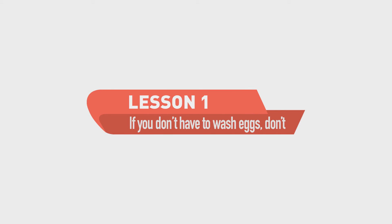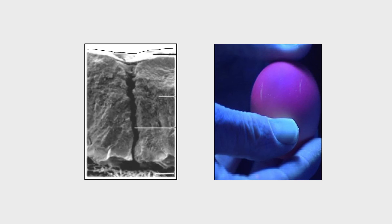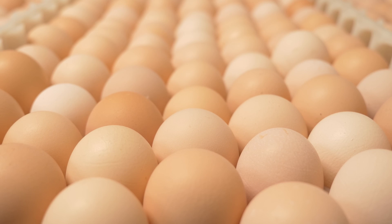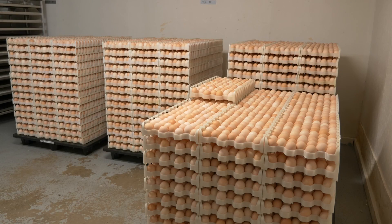This leads us to our first lesson: if you don't have to wash eggs, don't. Since there's no difference between these two categories, they should be shipped as is. Washing eggs can remove the cuticle, a protective layer on the outer part of the shell. We'll learn more about the cuticle in lesson number 7. Reducing the number of eggs you wash will lower the potential for bacterial contamination and will also save you time and money.